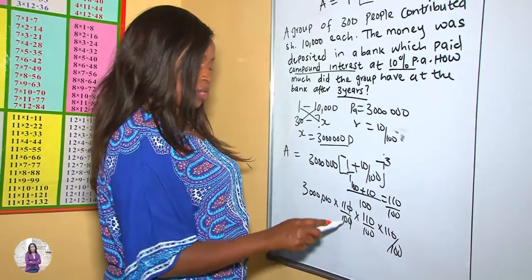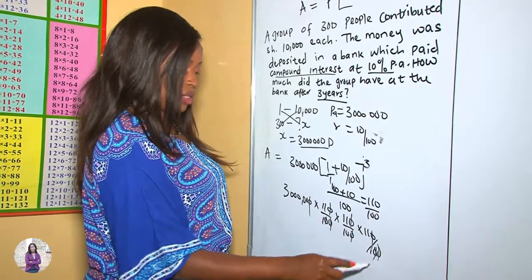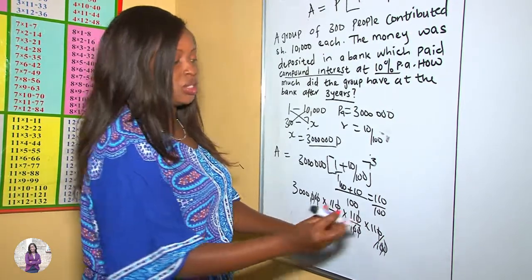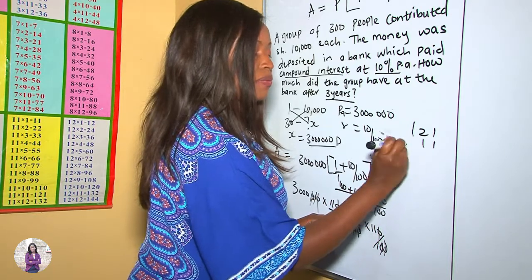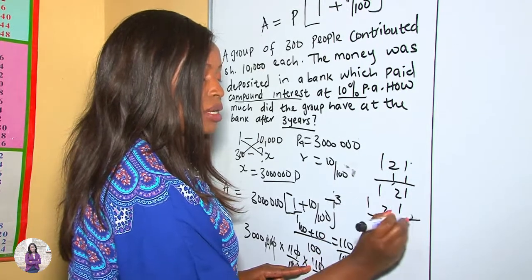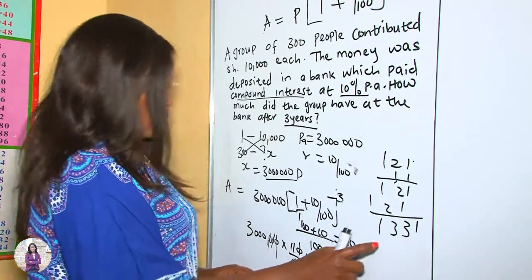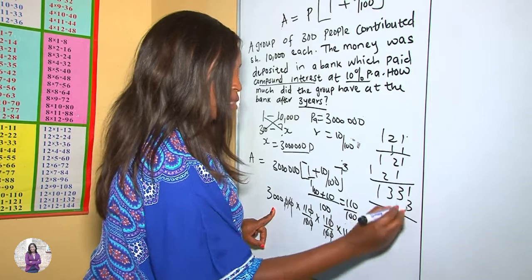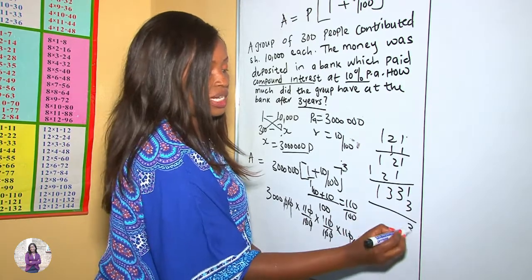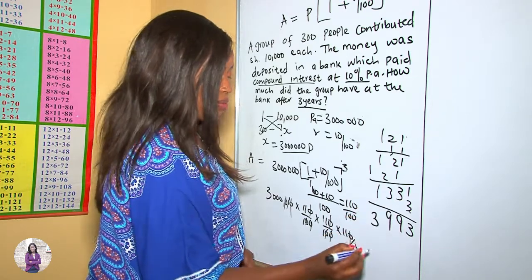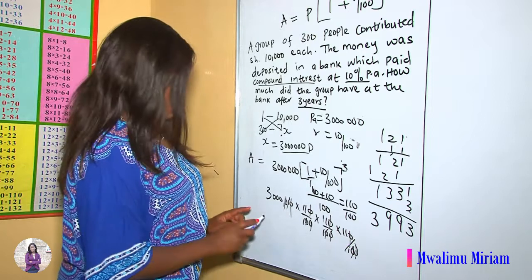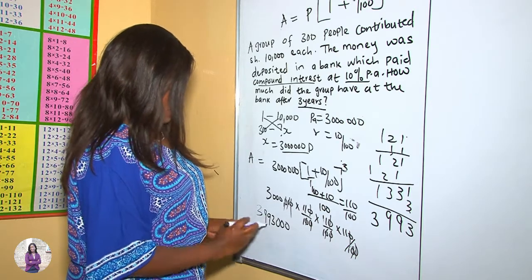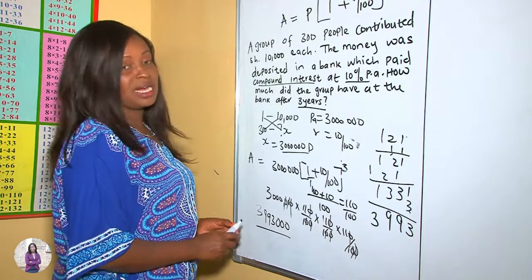We cross-multiply and cancel the zeros: zero with zero, zero with zero. Then 11 × 11 = 121, and 121 × 11 = 1,331.